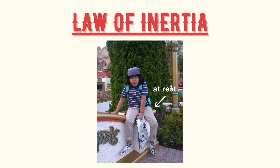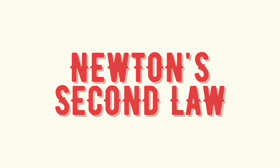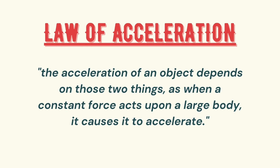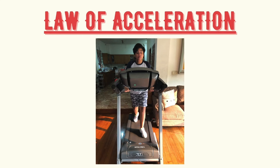Newton's second law of motion describes the relationship between force, acceleration, and mass of an object. It states that the acceleration of an object depends on those two things, as when a constant force acts upon a large body it causes it to accelerate. In the case of the photo being shown, it is an example of the second law of motion, because the person is showcasing acceleration as he runs on the treadmill. The mass of the person plays an important role, as a lighter or heavier mass indirectly affects how they run and how fast. The speed of the treadmill itself can also be changed, which affects other forces such as friction on the person's feet on the sliding treadmill floor.